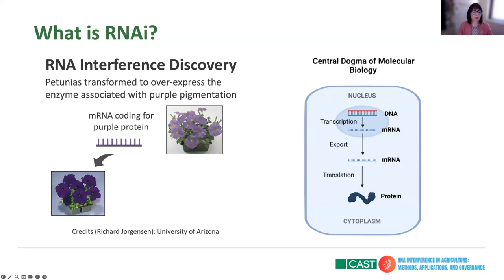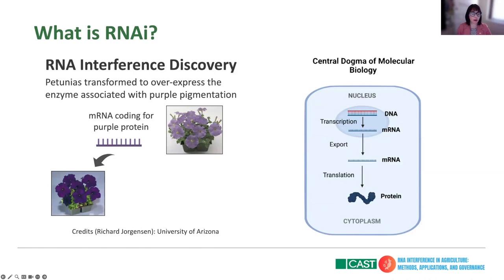How RNAi was discovered was in some way by mistake. There were researchers in the 90s at Caltech trying to transform petunias to overexpress an enzyme associated with purple pigmentation. What they thought they were doing is including that messenger RNA coding for the purple pigment to make those flowers more purple.